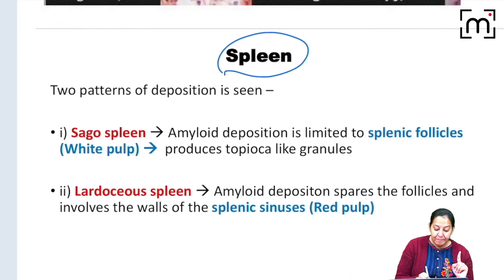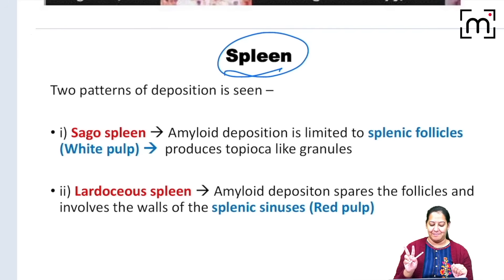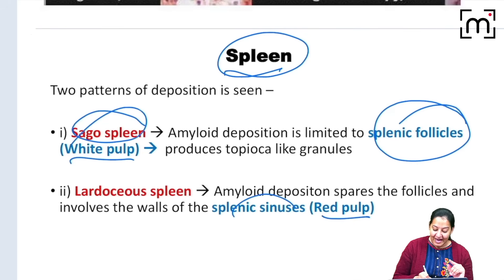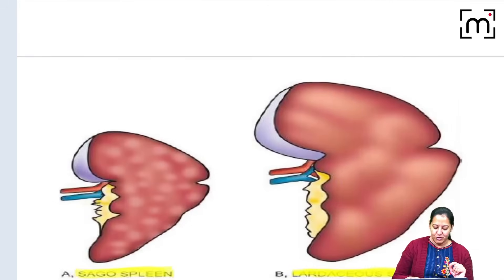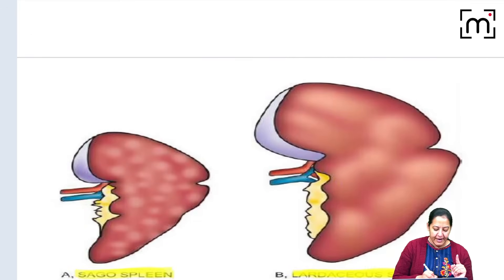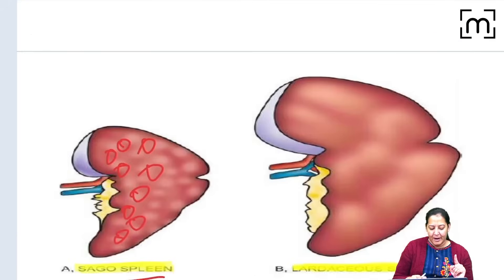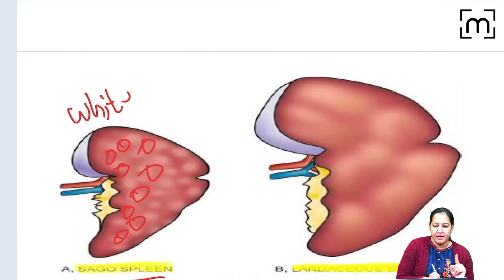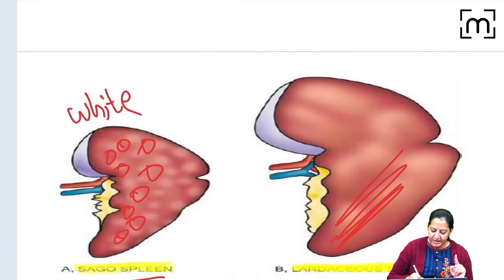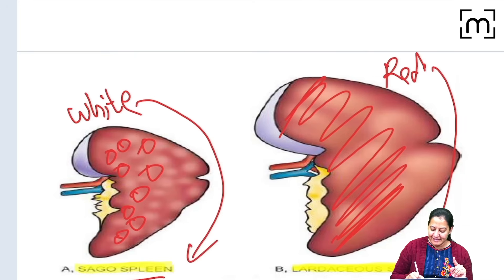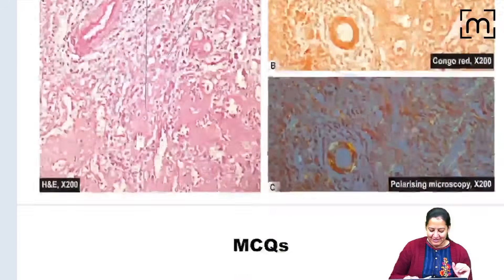The second important organ is the spleen. The spleen has two pulps: red pulp and white pulp. If amyloid is deposited in the white pulp (splenic follicles), it is known as sago spleen — it looks like sago grains. If amyloid is deposited in the red pulp (sinuses), it is known as lardaceous spleen, which is large in size. You can see in the diagrams the two different patterns of splenic amyloid deposition.